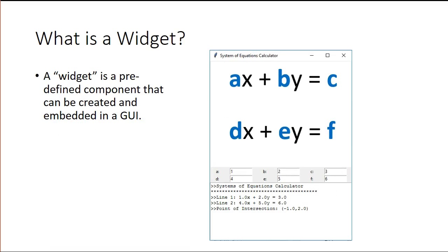The next term we want to familiarize yourself with is widget. A widget is a predefined component that can be created and embedded in a GUI. Let's look at our system of equations calculator and we'll talk about the different widgets that we're going to learn how to use. What I want to stress is that we're going to learn to use a small set of widgets but the concepts that we're developing are transferable to a wide variety of widgets.